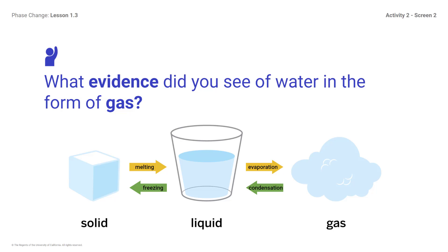Did you see mist coming off the hot water? What do you think the mist is — is it a gas? You might respond: we saw a mist, but that cannot be the gas, because gases are invisible. Remember that gases have no visible shape — gases are usually invisible. If water in a gas phase is invisible, what must be happening for us to see the mist? You might respond: the gas condensed into droplets of water. Is there any other evidence of water gas? You might respond: not directly, but if water condensed on the side of the plastic cup, it must have condensed from water gas found in the air.